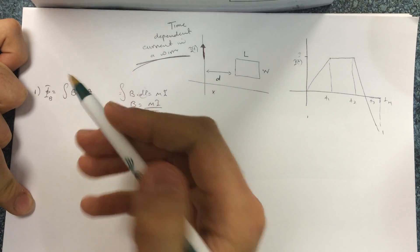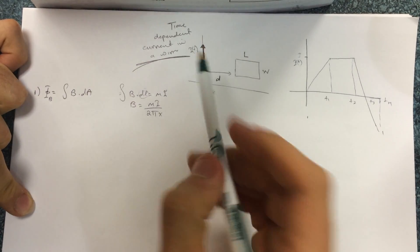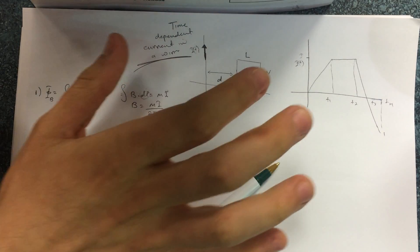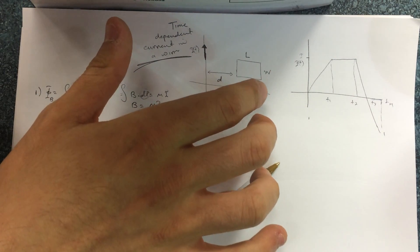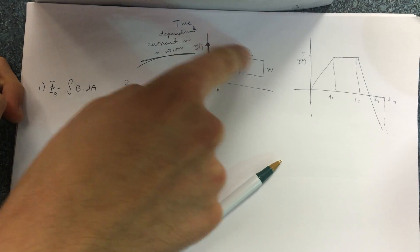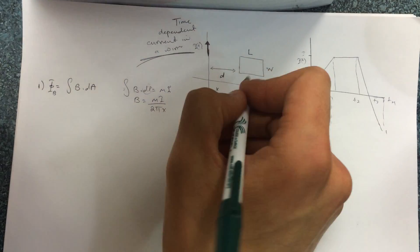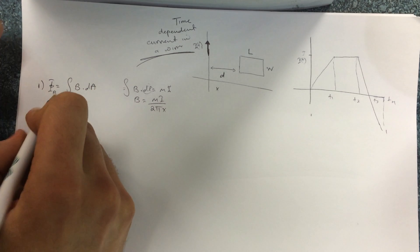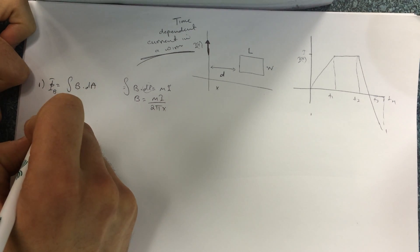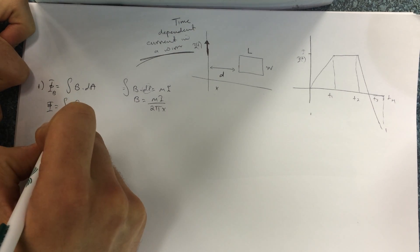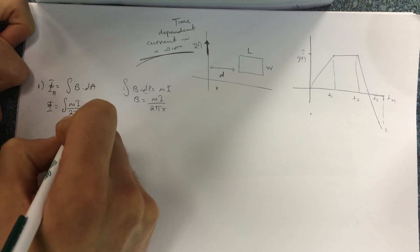With that, we set up the surface. Here's the wire — put my thumb with the current and curl my fingers, and that gives the direction of the magnetic field on this loop. It's going into the screen, shown as x's. So the magnetic flux will be the integral of μI / (2πx) dA.